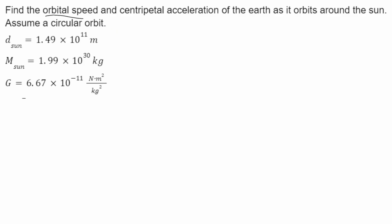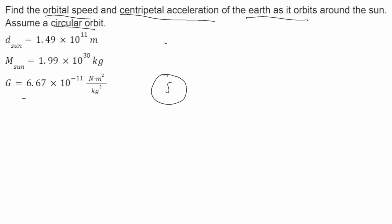In this problem, we need to find the orbital speed and the centripetal acceleration of the Earth as it orbits around the sun in a circular orbit. I'm going to start by drawing a diagram. This will be the sun, and this will be the Earth in its orbit around.